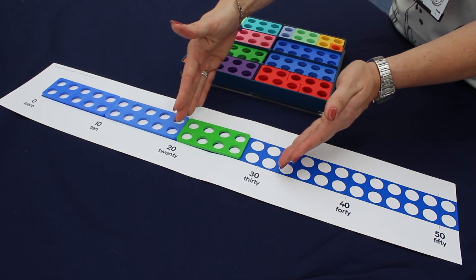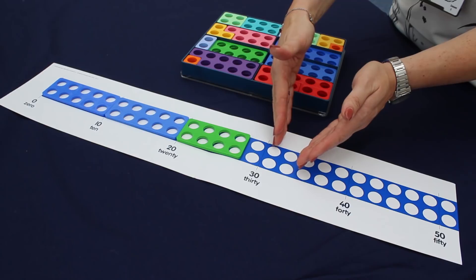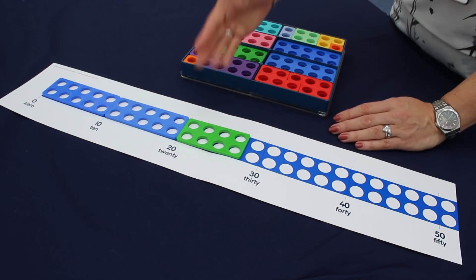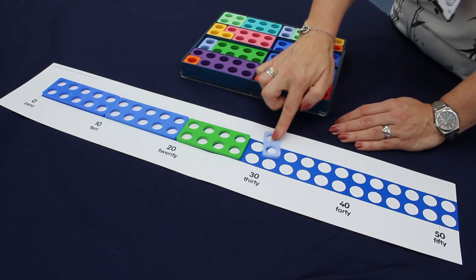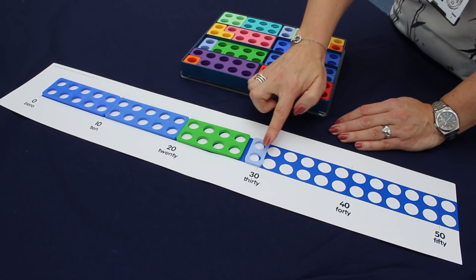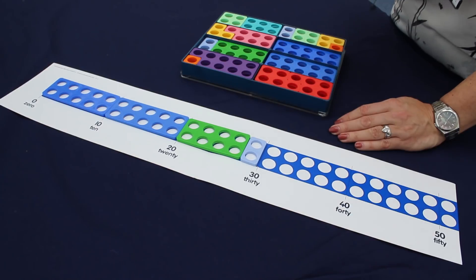But if we ask the children whether it's closer to 20 or closer to 30, and then can they prove it? So it's obviously closer to 30, and the children can prove it by saying it's 8 past 20, but only 2 away from 30.